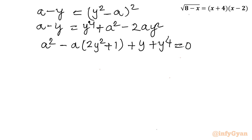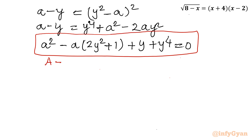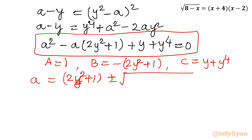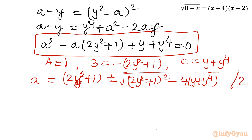This is a quadratic equation in a. Applying the quadratic formula with capital A equals 1, capital B equals minus (2y squared plus 1), and capital C equals y plus y to the power 4: a equals (2y squared plus 1) plus or minus square root of [(2y squared plus 1) squared minus 4(y plus y to the power 4)], divided by 2.